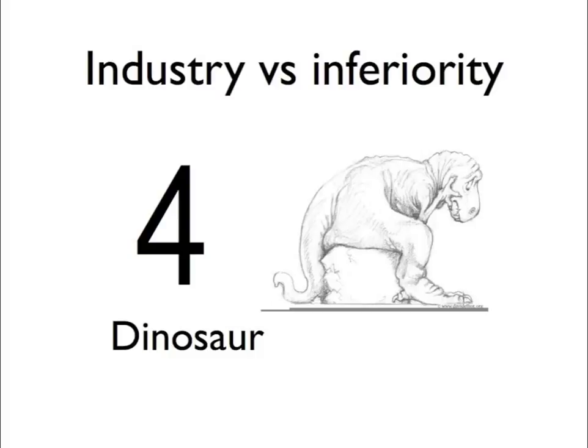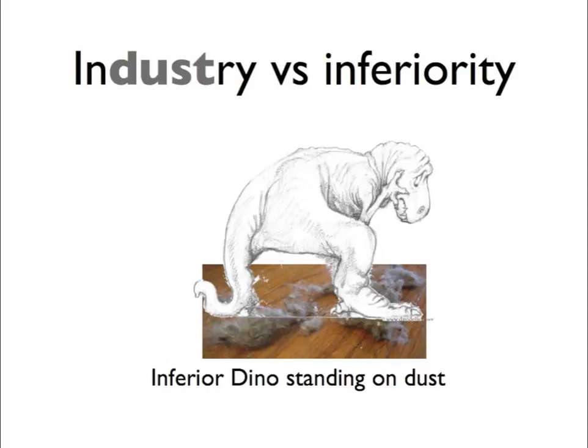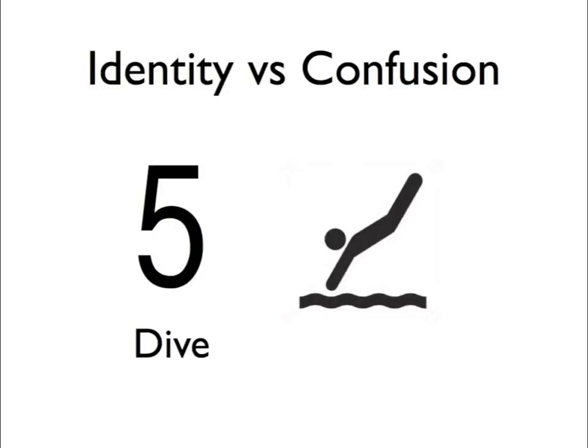Number four is industry versus inferiority, and remember number four is a dinosaur. Industry has the word dust in it, so let's have our dinosaur standing on some dust. We also need to picture something that's inferior — well, let's just make him look inferior. So we have an inferior dinosaur standing on some dust. Four, dinosaur, standing on dust, industry, and he's inferior.